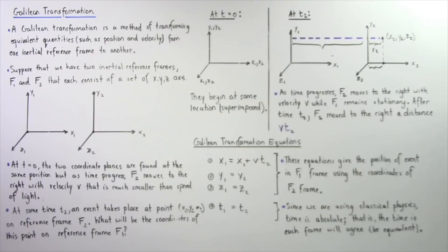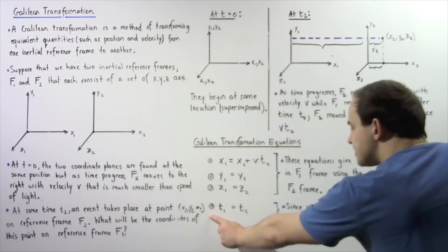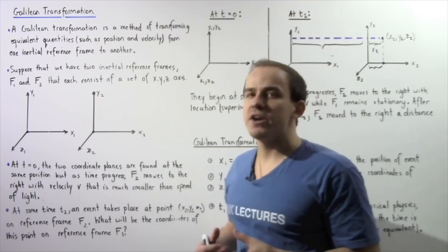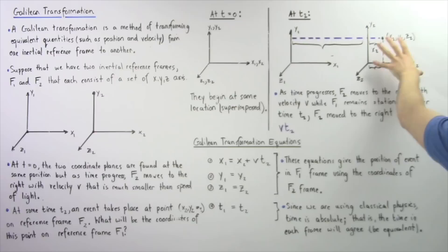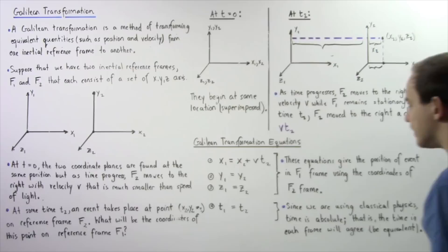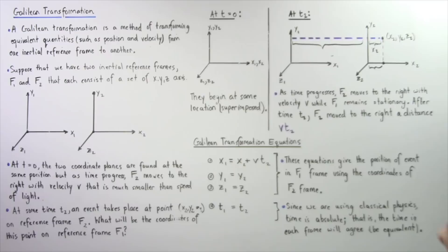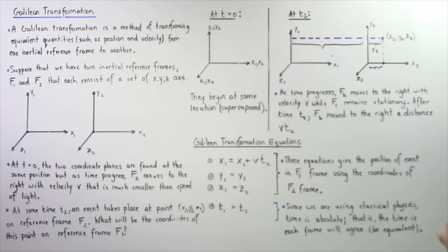These equations give us the position of the event in frame F1 given the coordinates in frame F2. The last equation comes from classical physics, where time is an absolute quantity. That means the time inside the car, T2, is equivalent to the time in frame F1, so T1 = T2. Whatever time has elapsed inside the car is the same quantity of time that has elapsed on the road.